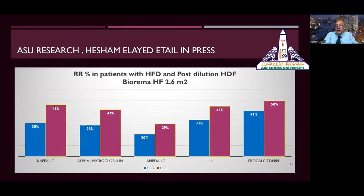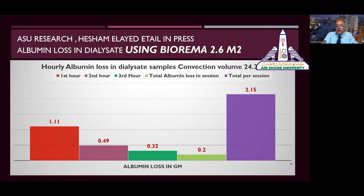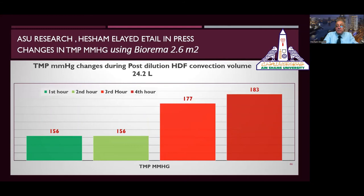Using the 2.6 m² surface area more permeable dialysis membrane, we can efficiently remove uremic toxins including kappa and lambda light chains, alpha-1 microglobulin, and interleukin-6 — relevant also in COVID-19 inflammation. In hemodiafiltration technique using the 2.6 m² surface area, we achieved markedly quantified and qualified removal of middle molecules. The albumin loss in the total dialysis session is only about 2 grams, making it safe, and transmembrane pressure remains stable throughout the four-hour session.